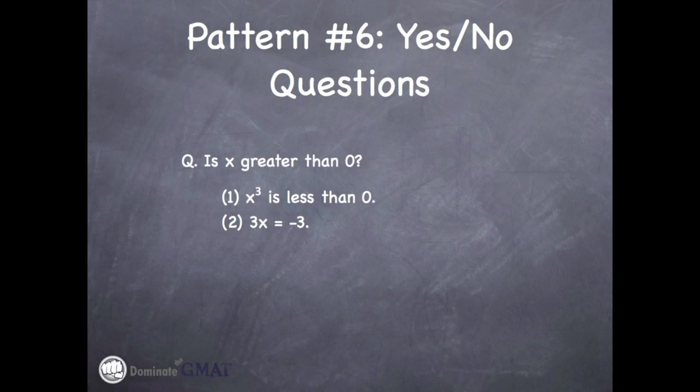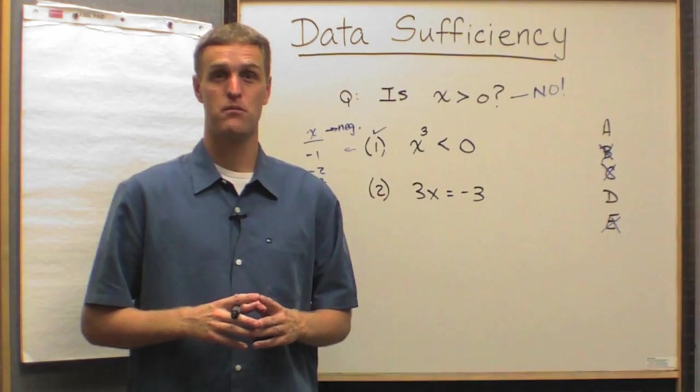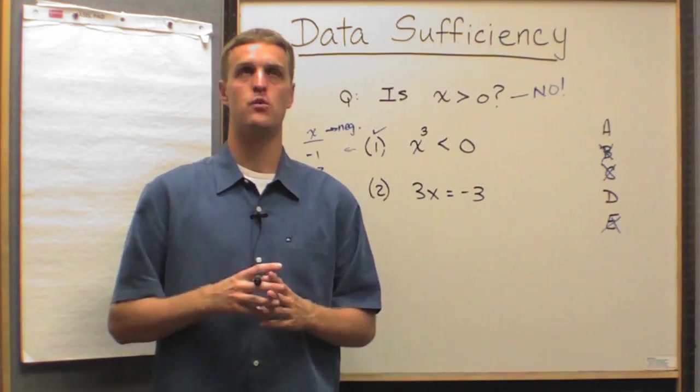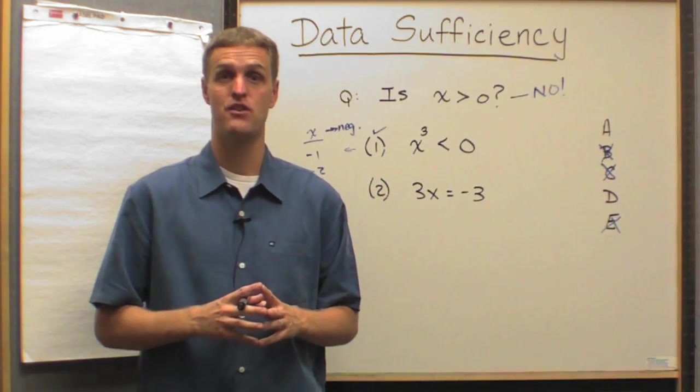But what if we knew exactly what x was? What if statement two tells us that 3x equals negative 3? Is that sufficient or not? Well, again, if you did the brain work beforehand and you said, okay, what information? Well, obviously, if they give me x, I mean, if they just tell me what x is, that would be sufficient to answer the question.